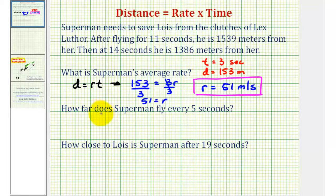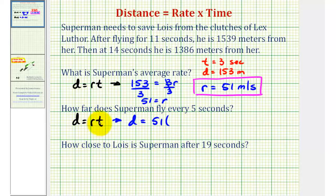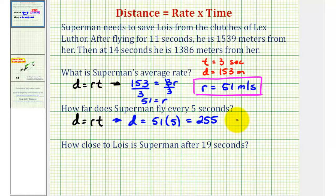Next, we want to know how far does Superman fly every five seconds. Again, we can use the distance equals rate times time formula. We want to solve for d when the rate is 51 meters per second and the time is five seconds. 51 times five is equal to 255. Therefore, every five seconds, Superman travels 255 meters.